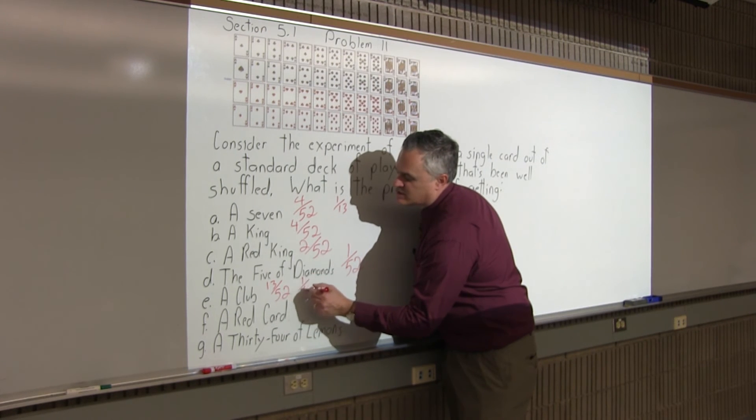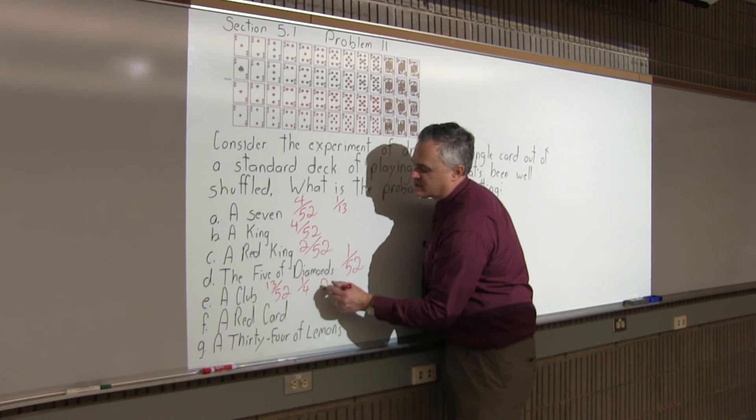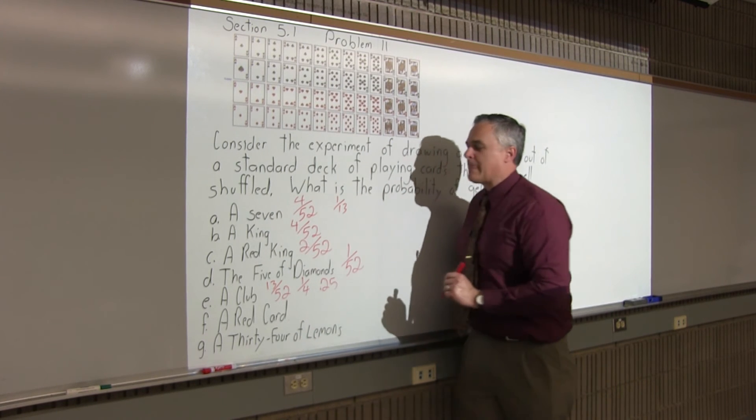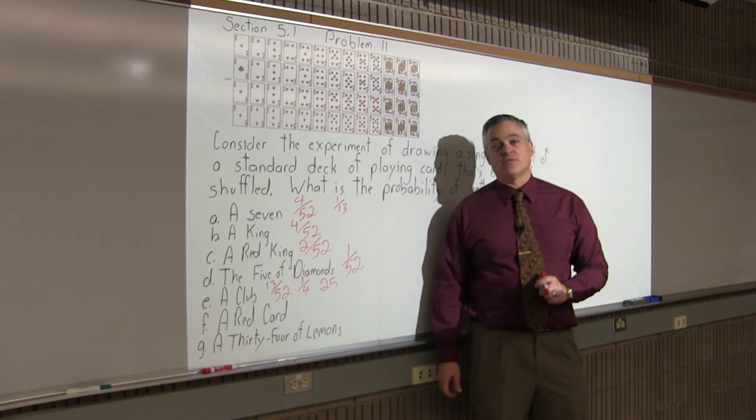That one does reduce so nicely, I can't resist. It's 1 fourth, which I know as a decimal is 0.25. Though, if you left 13 over 52, that would be okay.